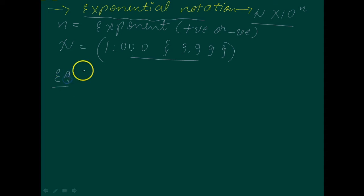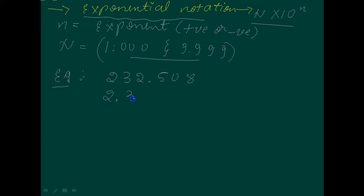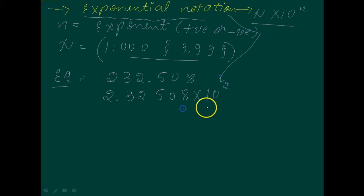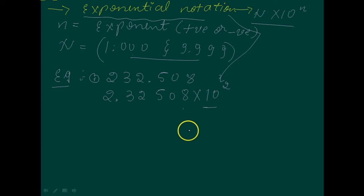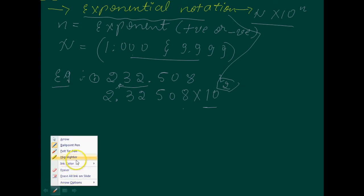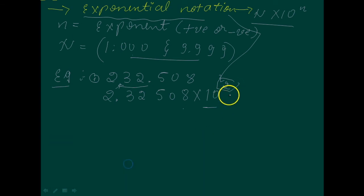For example, consider the number 232.508. This can be represented as 2.3258 × 10². Note that while writing it, the decimal had to be moved to the left by two places, so the exponent is 10².